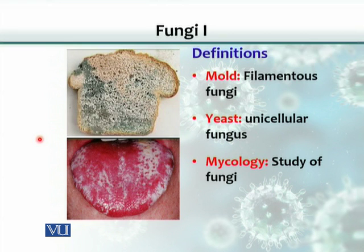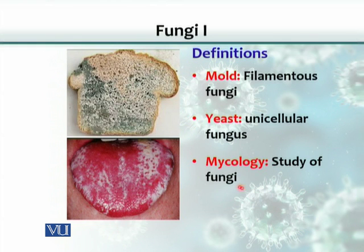Fungi are basically seen as mold, which we see as filamentous growth, or as yeast. Yeast is basically a unicellular fungus — a non-filamentous form of the fungus. And mycology is the study of fungus or fungi. Some people say 'fungi,' some say 'fungi' — both are correct, so whichever you choose is fine.